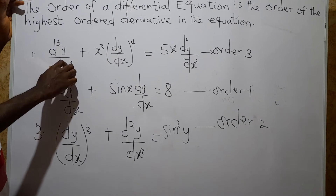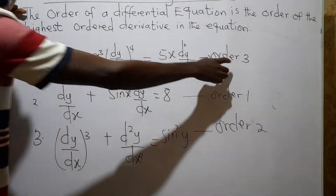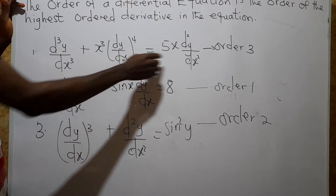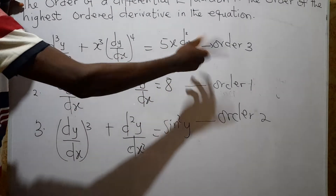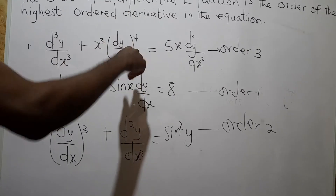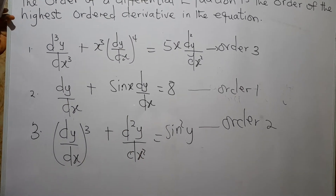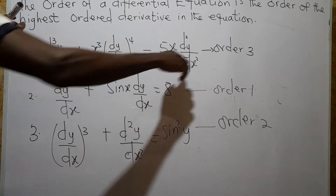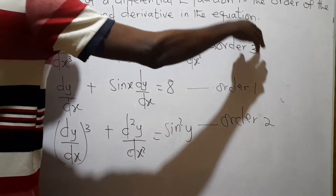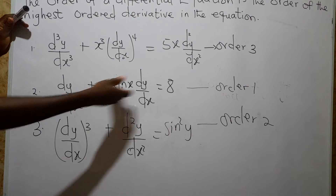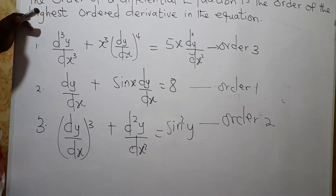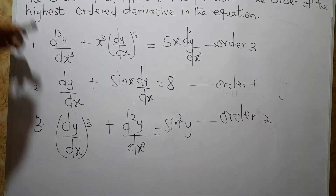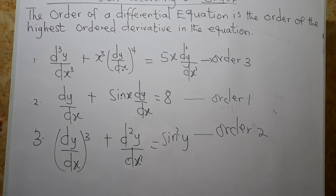We can say the first is a third-order ordinary differential equation — it has only one independent variable and differentiation is done with respect to it, making it ordinary. The second is a first-order ordinary differential equation, and the third is a second-order ordinary differential equation. I hope you get the concept of order.